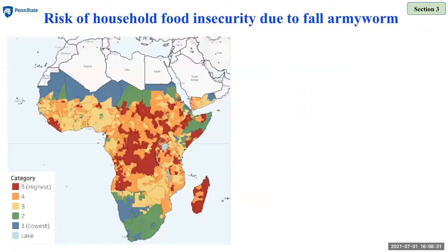Since its introduction, fall armyworm has emerged as a serious threat to the productivity of cereal crops such as maize and sorghum. These are the two major staple food crops of smallholder farmers in Africa. Therefore, this pest is affecting the food security of millions of African farmers, with higher impact in Eastern, Central, and Western African countries.